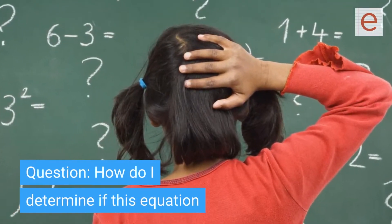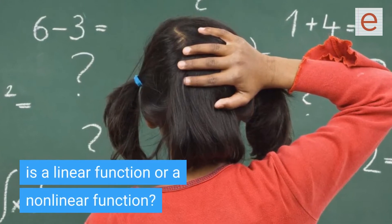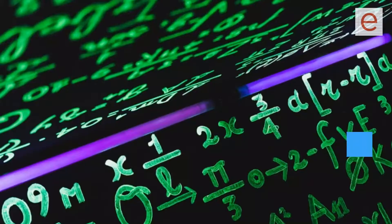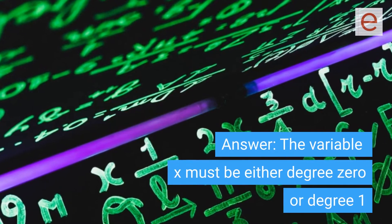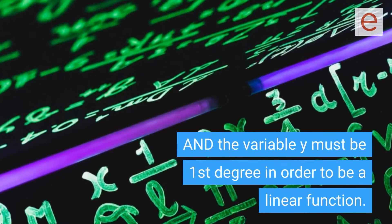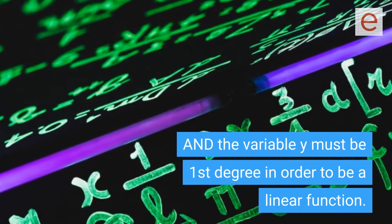Question: How do I determine if this equation is a linear function or a nonlinear function? Answer: The variable x must be either degree 0 or degree 1, and the variable y must be first degree in order to be a linear function.